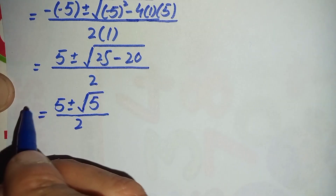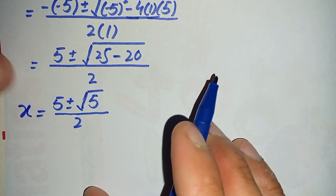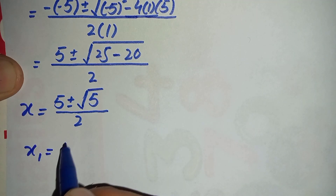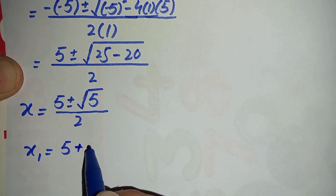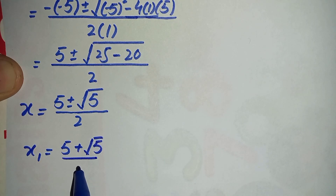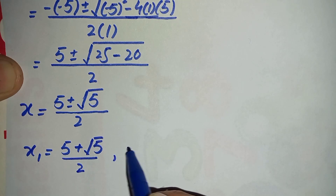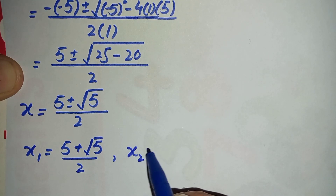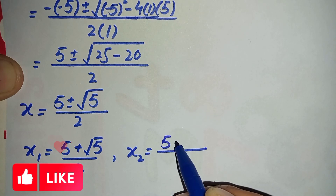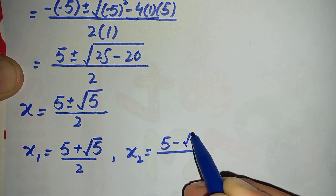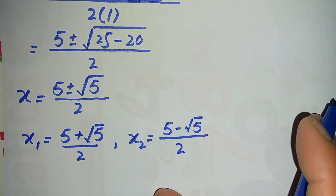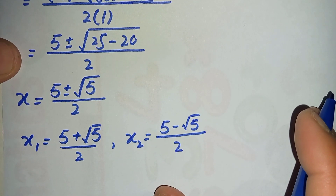There are two possible values of x. The first value is x₁ equals 5 plus the square root of 5, divided by 2. The second value is x₂ equals 5 minus the square root of 5, divided by 2. These are the two possible values of x.